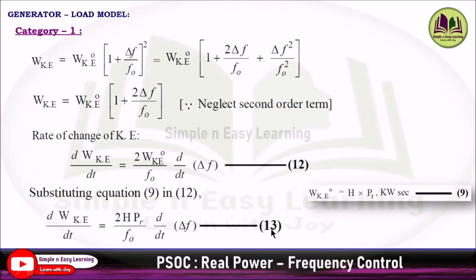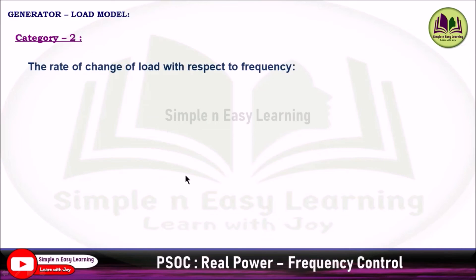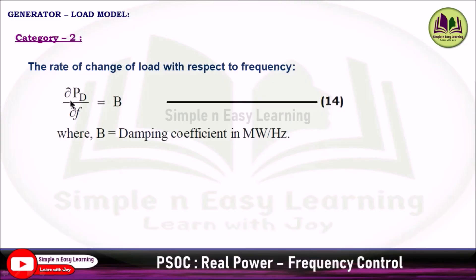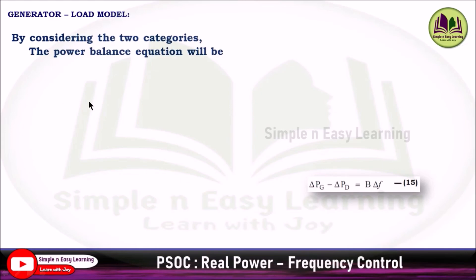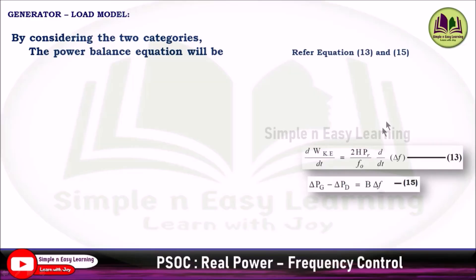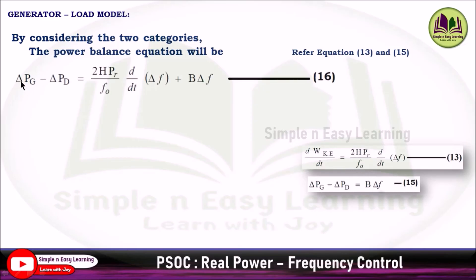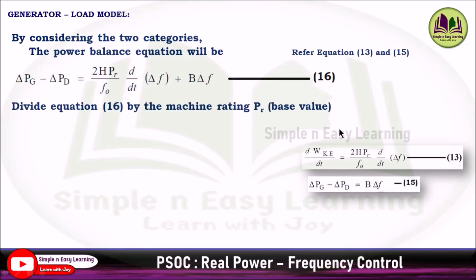Category 2: the rate of change of load with respect to frequency is ∂Pd/∂f = B, where B is the damping coefficient in MW/Hz (Equation 14). The damping coefficient has a positive value for motoring load, giving del_Pg − del_Pd = B·del_f (Equation 15). Combining both categories, the power balance equation is: del_Pg − del_Pd = (2H·Pr/f₀)·d/dt(del_f) + B·del_f (Equation 16).